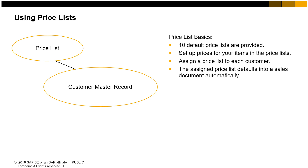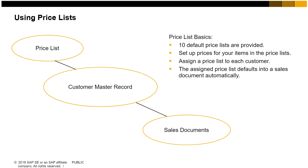The price list can be changed in the customer master. When you enter the customer in a sales document, the assigned price list defaults to the sales document automatically, and the system will use that price list to price the items in the order. More complex pricing can also be used, such as special prices, discount groups, and pricing hierarchies — these are discussed in the e-learning topics for pricing. Prices can also be changed in the sales order by authorized users; for example, a salesperson might give a 5% discount to a particular item or to a whole sales order.